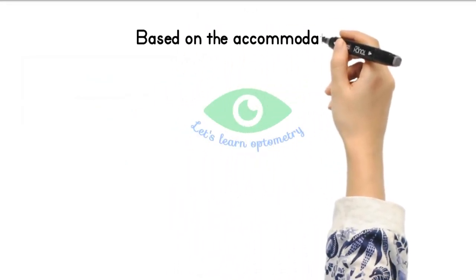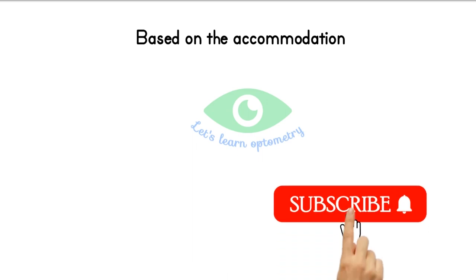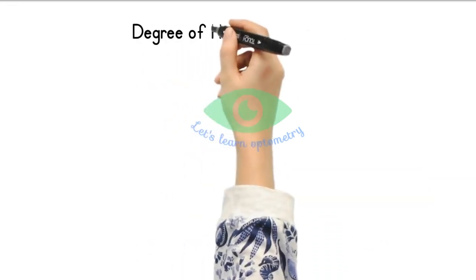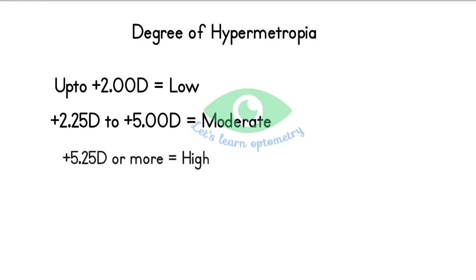Based on effect of accommodation, we already have a detailed video on this topic with easy examples, so I'll give the link in the description. Please pause and watch that before continuing. For degree of refractive error: up to plus 2 diopters is low hypermetropia, 2.25 to 5.25 is moderate, and more than 5.25 is high hypermetropia.